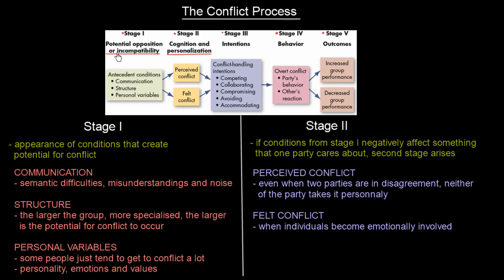Stage one: potential opposition or incompatibility. The conflict always arises from something, and there are three possible sources of conflict where it can occur: communication, structure, and personal variables. Communication can involve semantic difficulties between two parties engaged — with semantics we mean the truthful meaning — so that the parties do not really understand what the other person means, and this can lead to conflict.